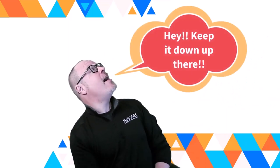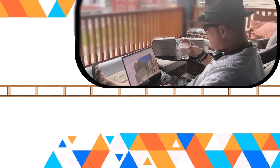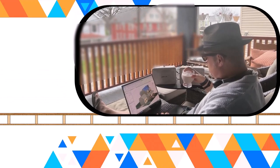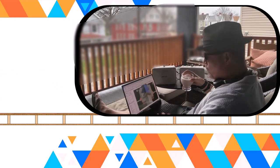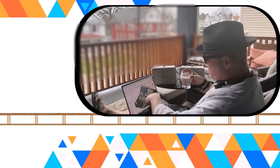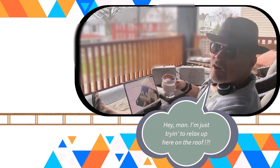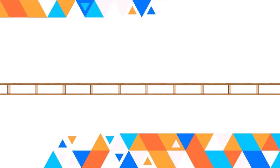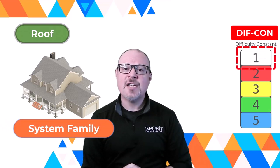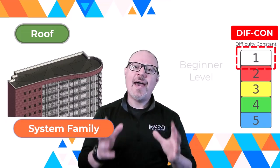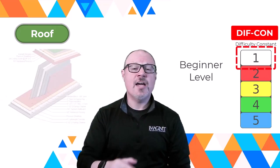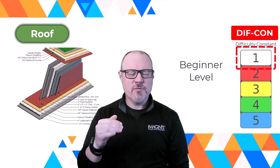Today we're going to be talking about roofs in the Revit software and the ability to stack material on top of each other, making different roof types with different materials and thicknesses that add up to the total thickness of the roof structure, as well as membranes, topping, and roof structure.